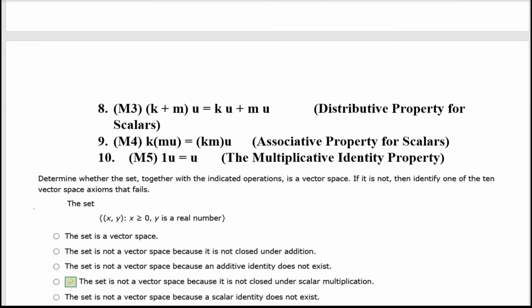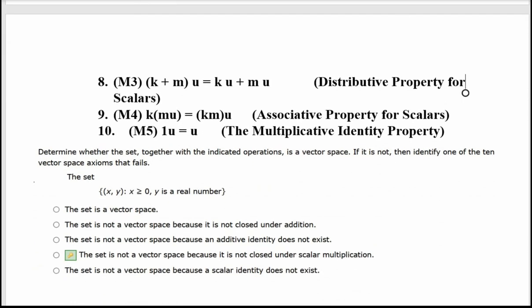Problem 1: Determine whether the set, together with the indicated operations, is a vector space. If not, identify one of the ten vector space axioms that fails. The set consists of two-component vectors (x, y) such that x is positive or zero. This will fail when you take a scalar — scalars can be any real number — so a negative scalar times vector (x, y) forces the first component to be negative, which is not allowed. The set is not a vector space because it is not closed under scalar multiplication.